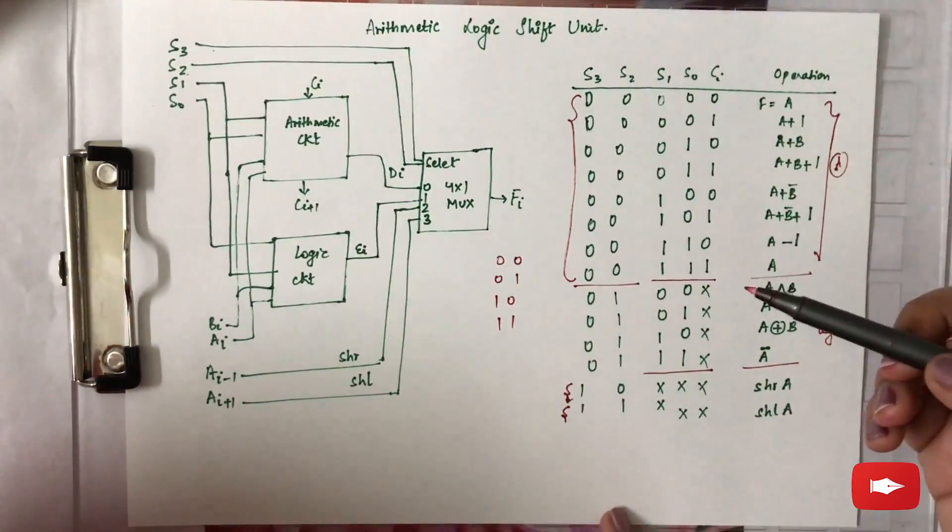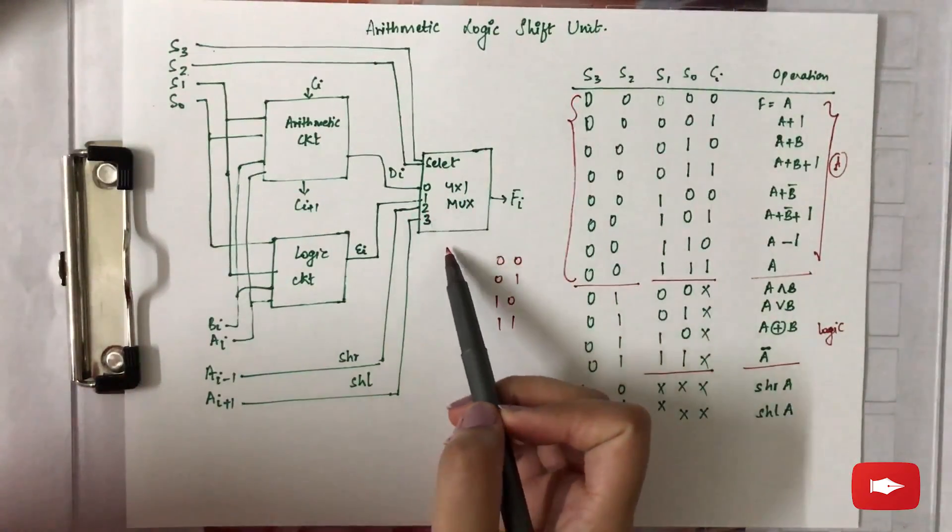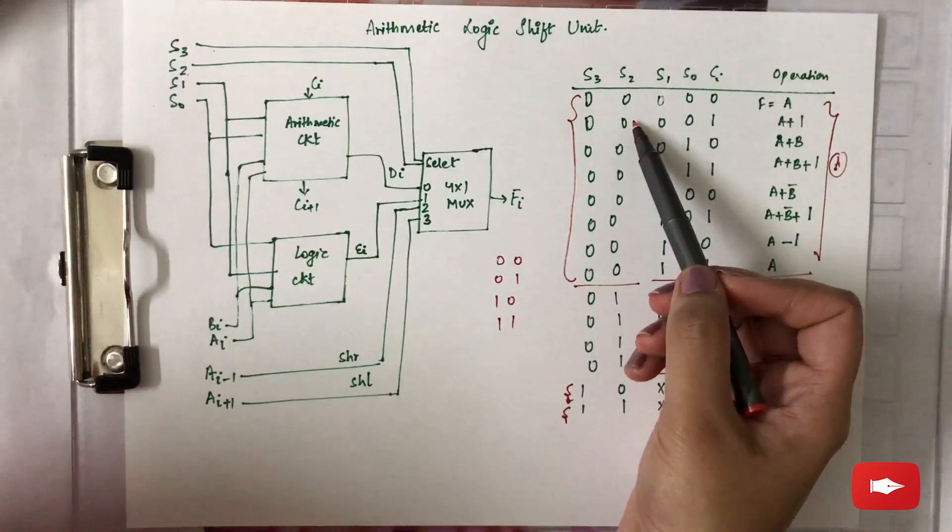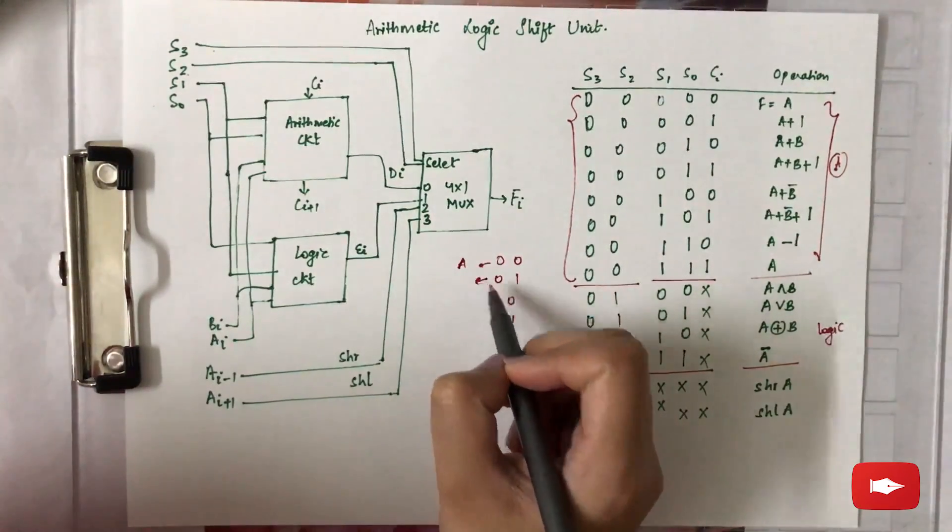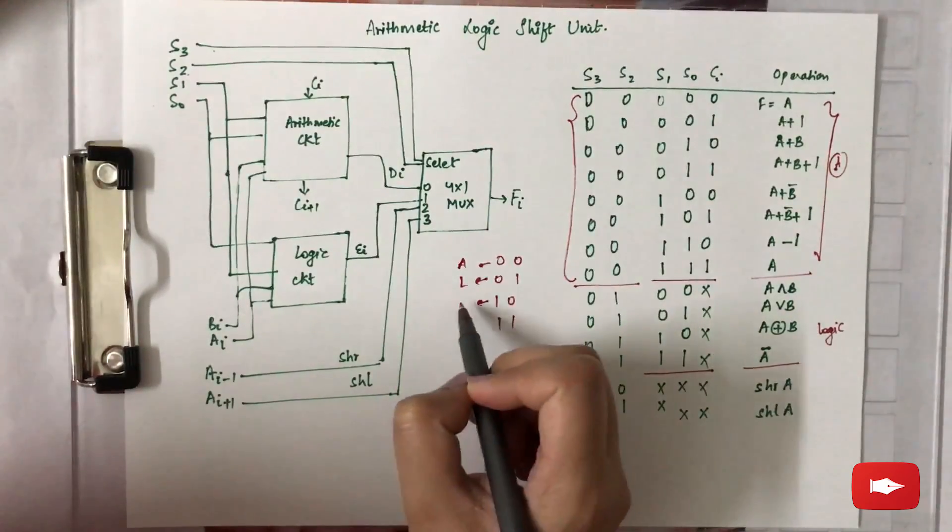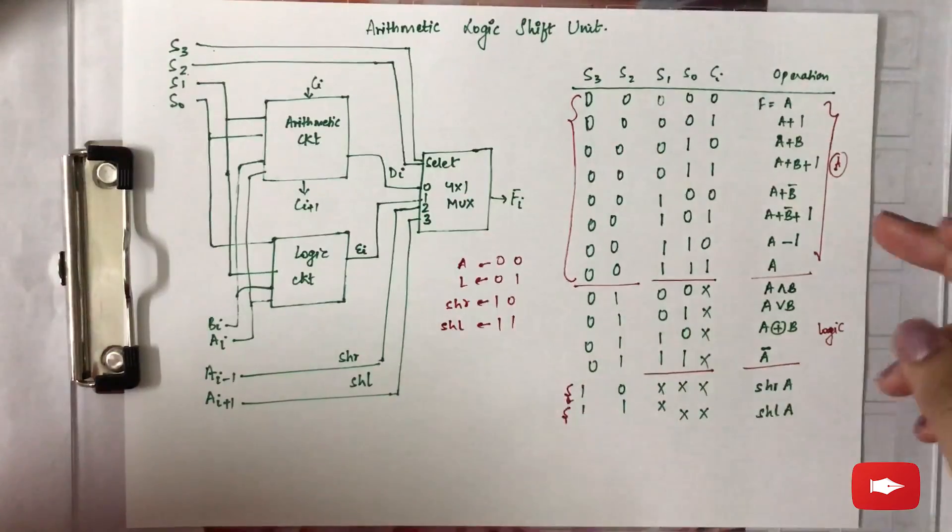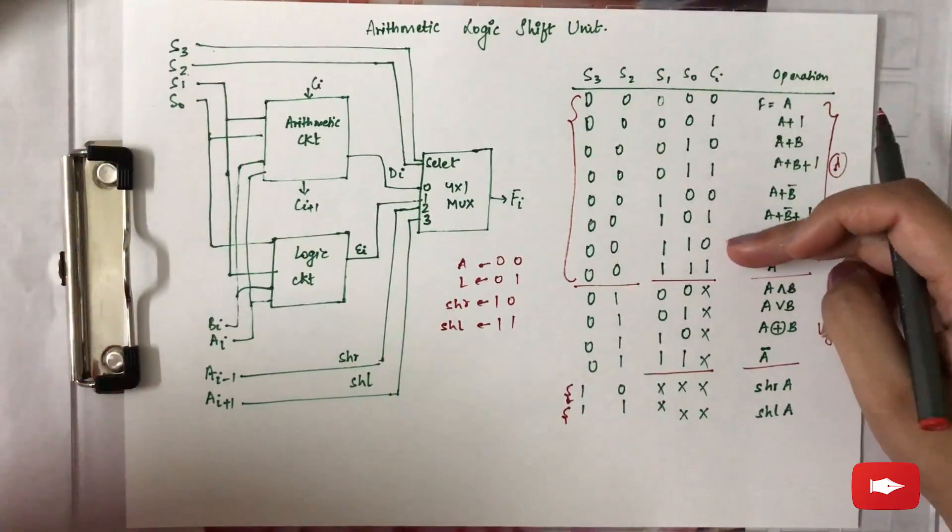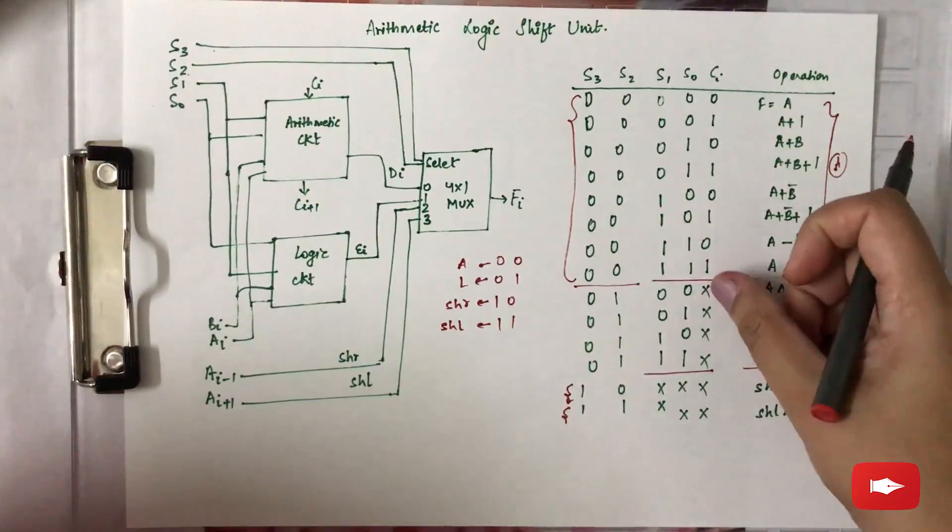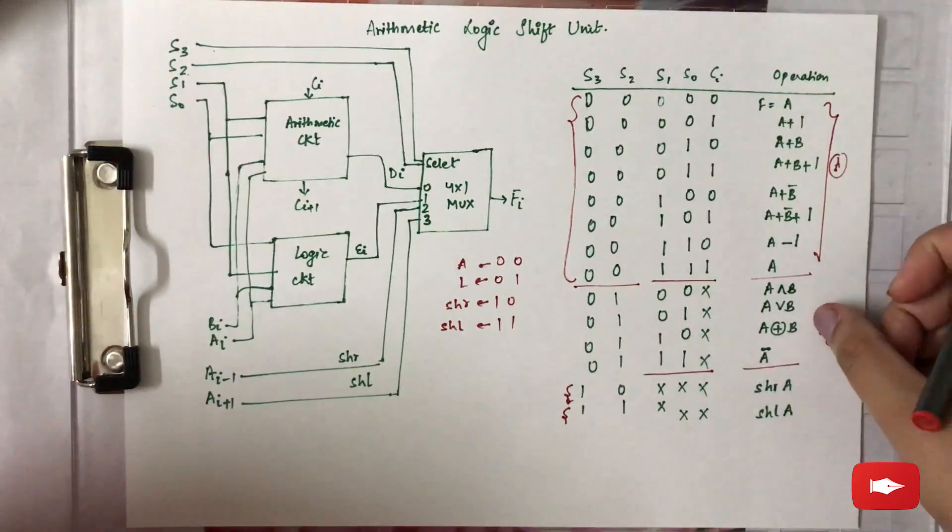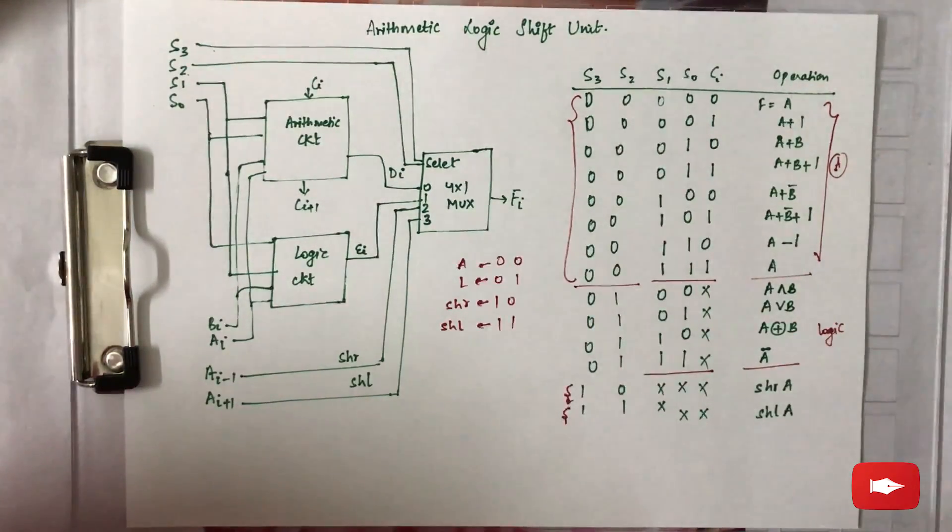Just to repeat again: s3 and s2 is deciding whether it has to be arithmetic, logic, or shift micro-operation. Therefore it can be either 0 0, 0 1, 1 0, 1 1. 0 0 for arithmetic, 0 1 for logic, 1 0 for shift right, 1 1 for shift left. So first eight operations depending on the carry value are arithmetic values. Next four where carry is not needed, so it is don't care, it is logic micro-operations. And next two are the shift. Thus this is a combinational circuit getting all the results in one circuit.